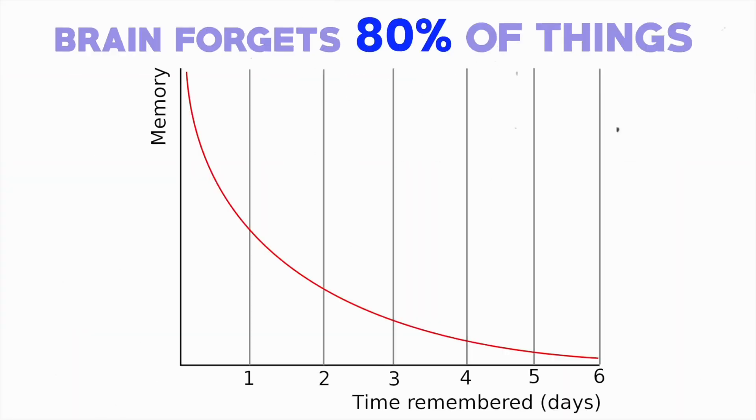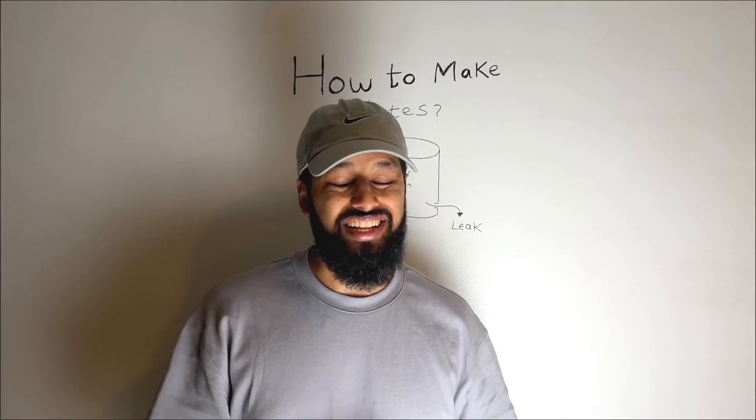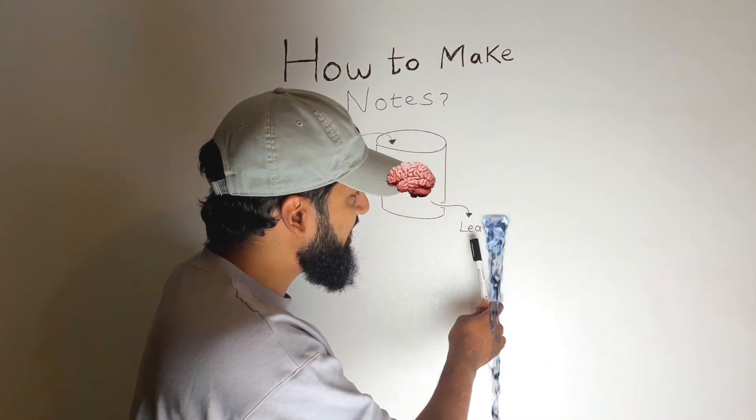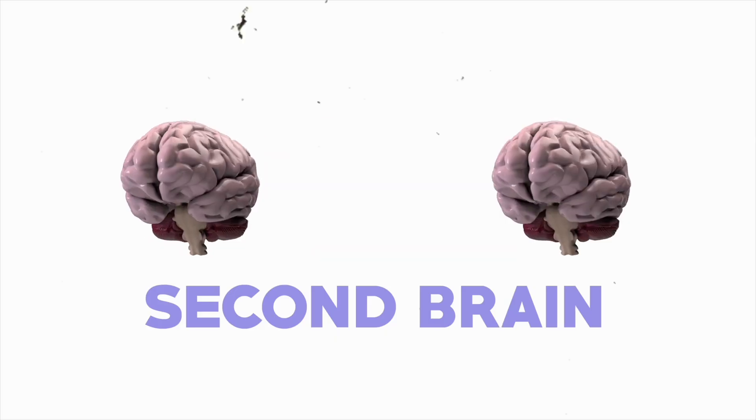So what that means is your brain forgets 80% of the stuff that it's learned by the next day. That's a crazy amount. So what we need is instead of it all leaking away, we need a second brain.